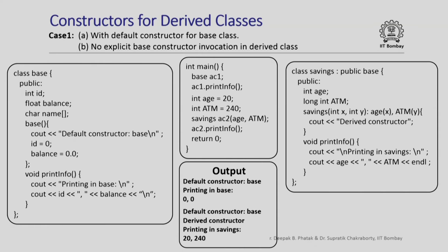Now, we all know that when an object of a particular class is instantiated, the constructor for that class has to be invoked. When we have classes derived from base classes and I am instantiating an object of the derived class, I am also instantiating an object of the base class, because an object of the derived class also contains everything that the base class contains. So the question is: how are the constructors of the base class and the derived class going to be invoked when I instantiate an object of the derived class?